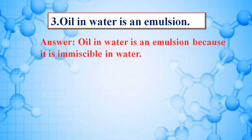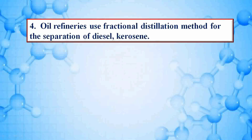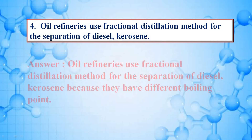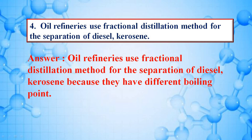Oil in water is an emulsion — answer is oil in water is an emulsion because it is immiscible in water. Oil refineries use fractional distillation method for the separation of diesel and kerosene because they have different boiling points.